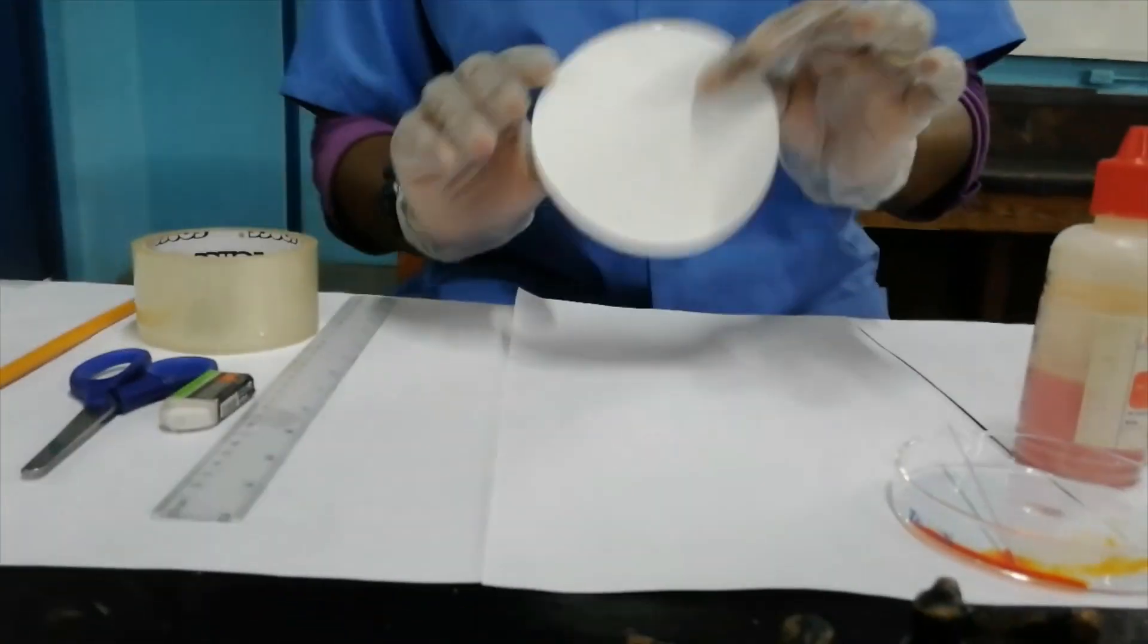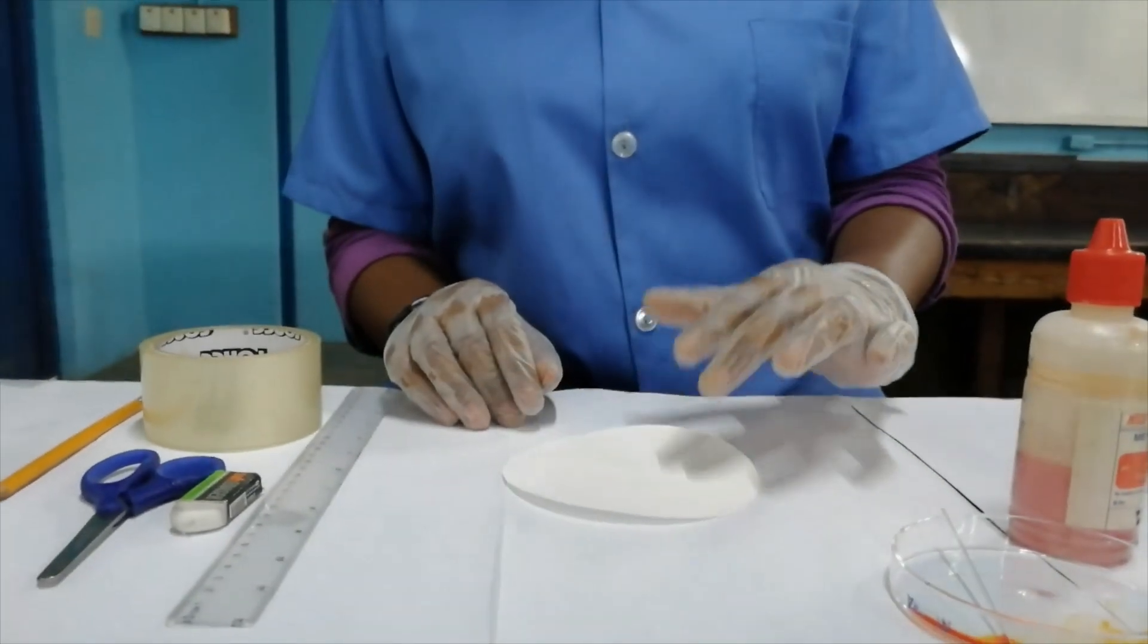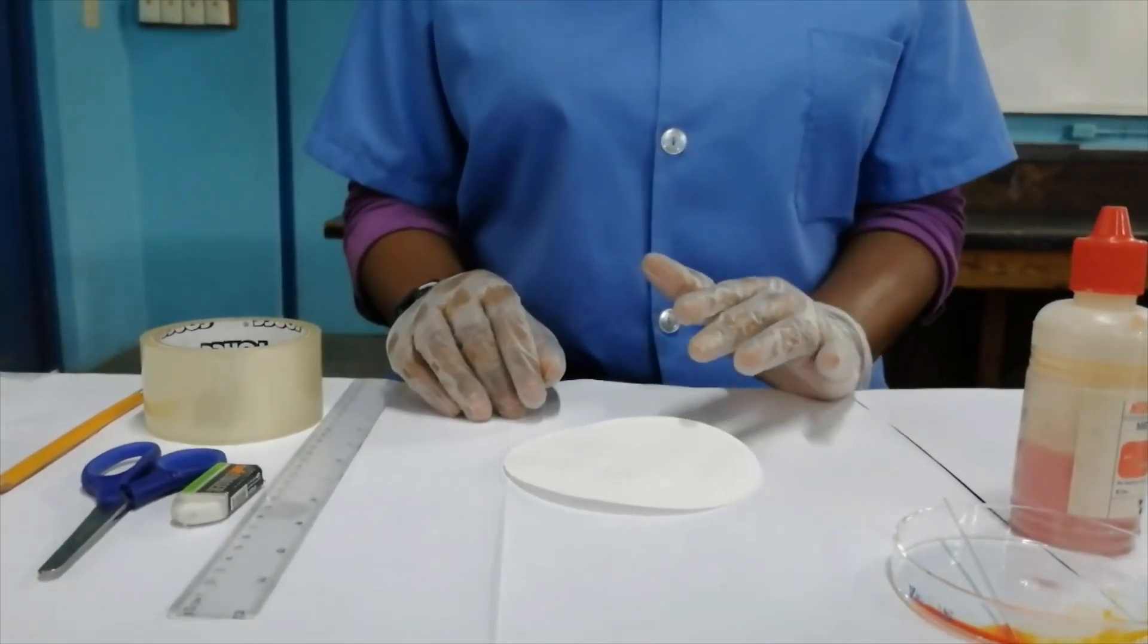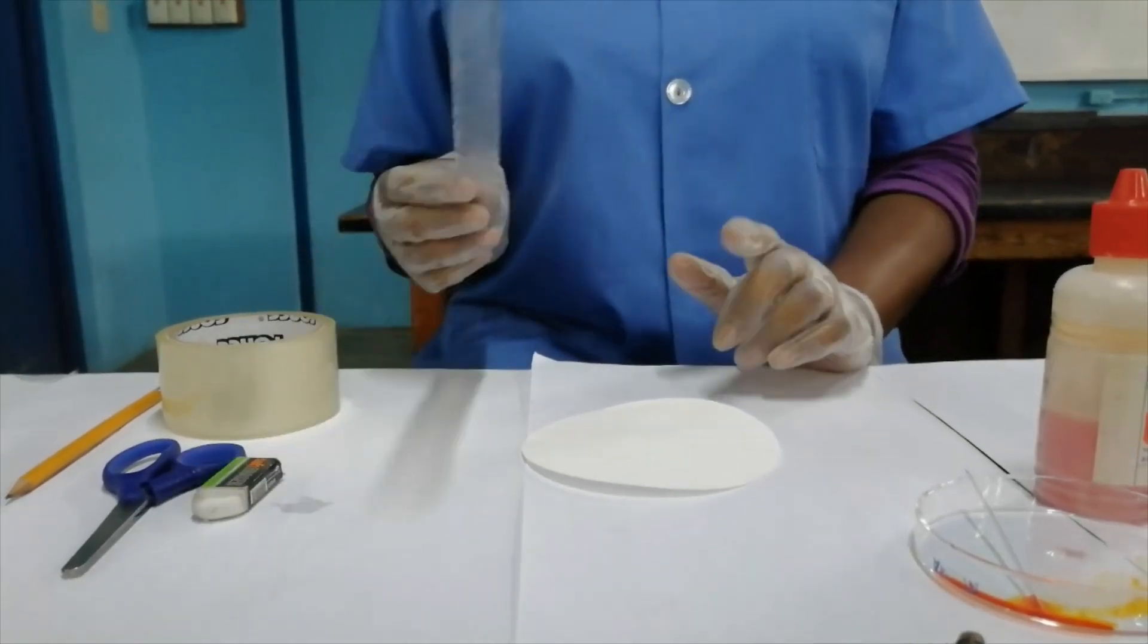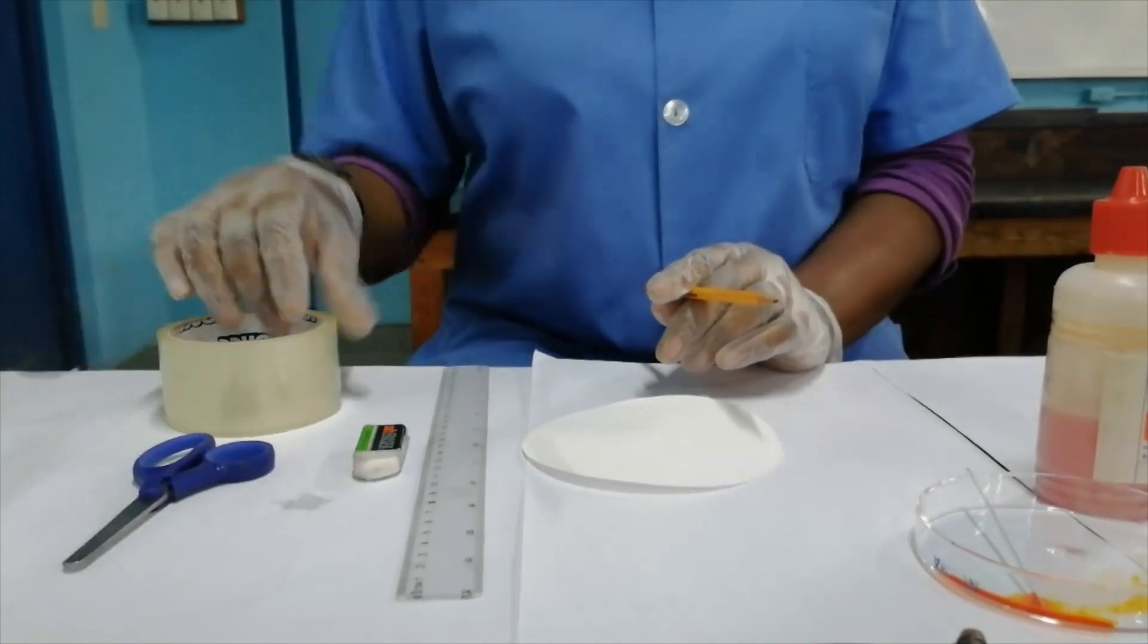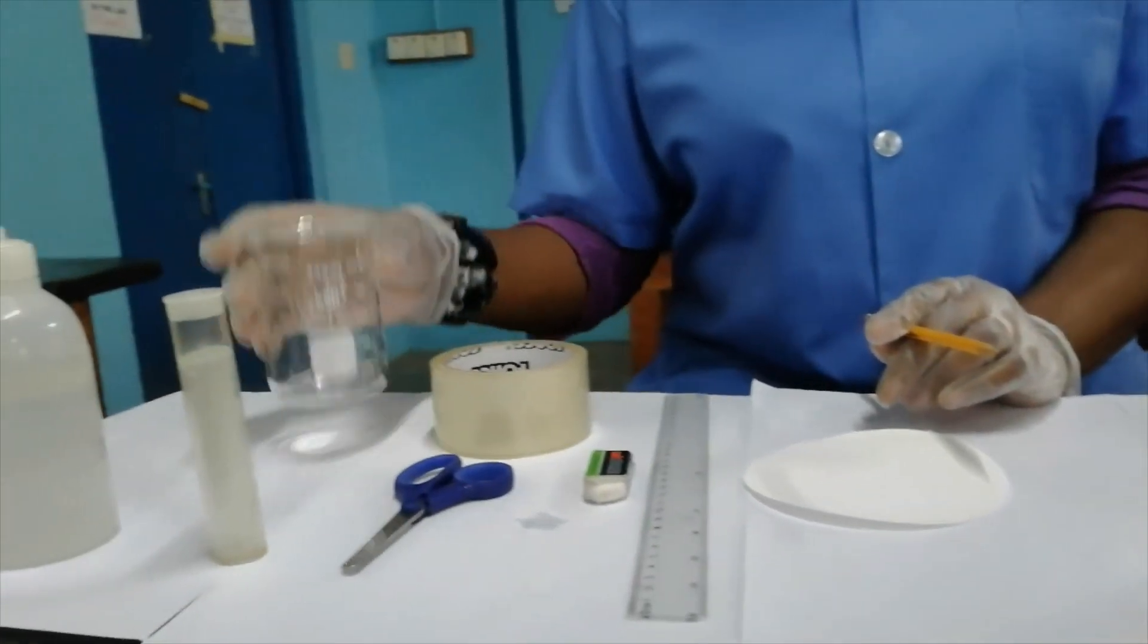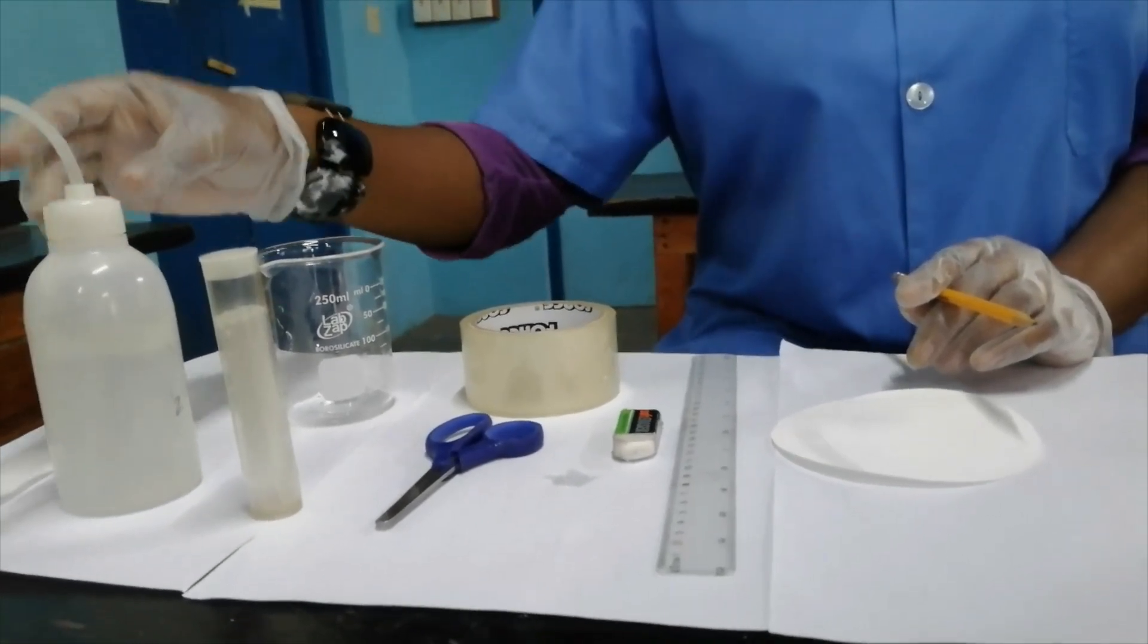We have filter paper that we're going to modify into our chromatograph, which is the instrument used to carry out the technique. We also have a ruler, pencil, eraser, scissor, tape, beaker, and water in the wash bottle which is our mobile phase.